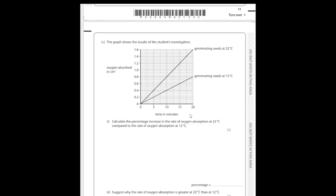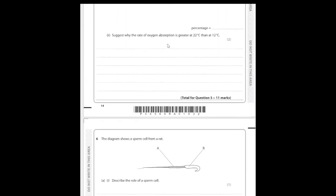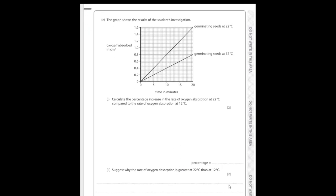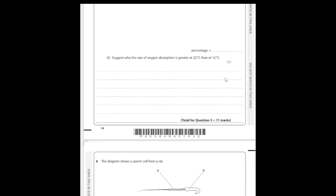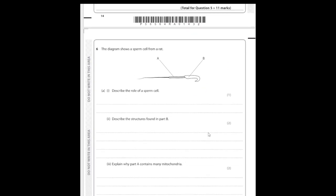Finally, 'suggest' — it is exactly what it says, just giving a reasoned suggestion. Here it asks why the rate of oxygen absorption is higher at 22°C than at 12°C. Even without seeing all the question parts: what process uses oxygen? Respiration. So at higher temperature, more respiration occurs due to more enzyme activity, greater kinetic energy, more enzyme-substrate collisions per unit time, and more enzyme-substrate complexes forming. That's two marks' worth of content easily covered.